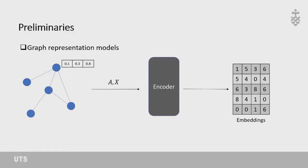Let me introduce some preliminaries. Graph representation models are widely used in graph learning tasks. They take graphs as input and output the corresponding embeddings. For example, given a graph with adjacent matrix A and feature matrix X as input to an encoder, the model outputs the embedding of each node. Those embeddings are then used for various downstream tasks such as node classification and link prediction. Typical graph representation models include node2vec, matrix factorization, and graph neural networks.